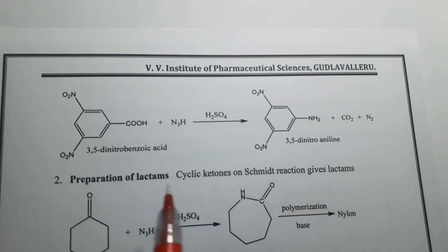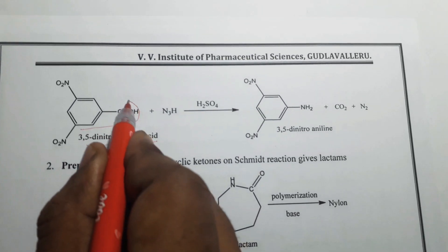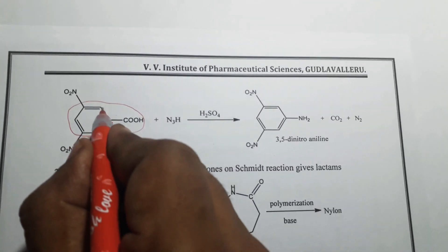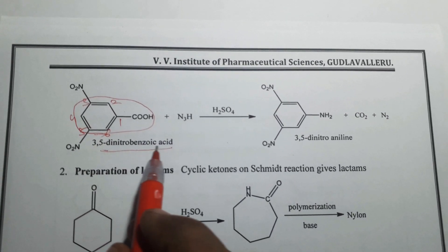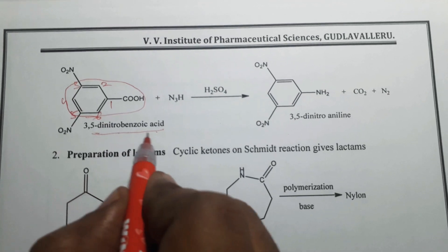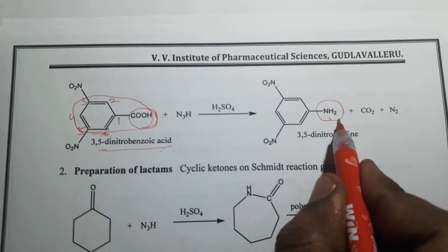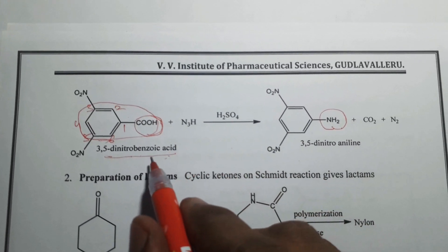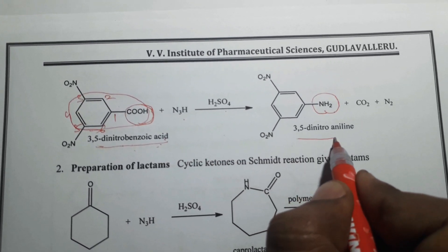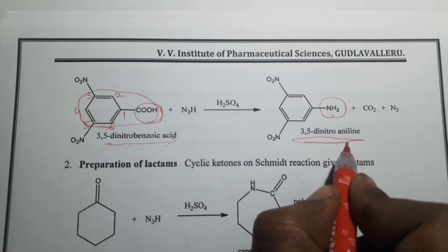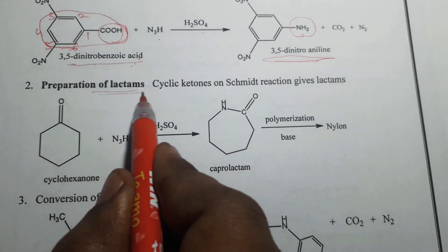Another example: 3,5-dinitrobenzoic acid. This is the structure of benzoic acid with nitro groups at the third and fifth positions, making 3,5-dinitrobenzoic acid. This compound, consisting of a carboxylic acid group, is converted into the respective amine by Schmidt reaction. So 3,5-dinitrobenzoic acid on reaction with hydrozoic acid in presence of sulfuric acid gives 3,5-dinitroaniline. Next application: preparation of lactams.